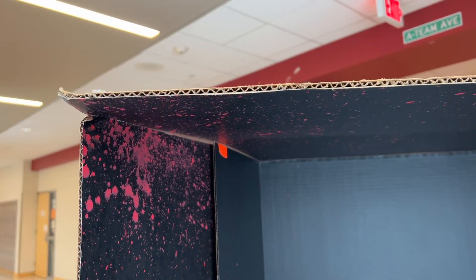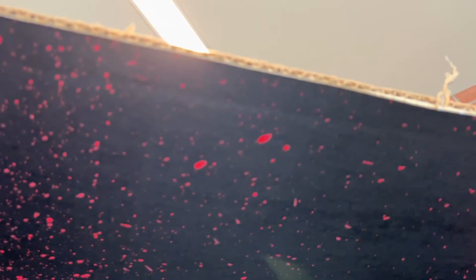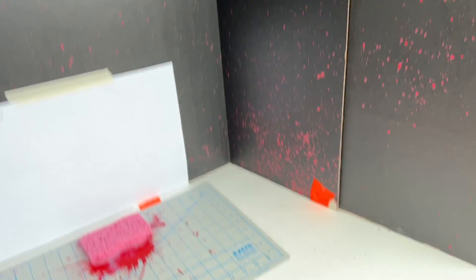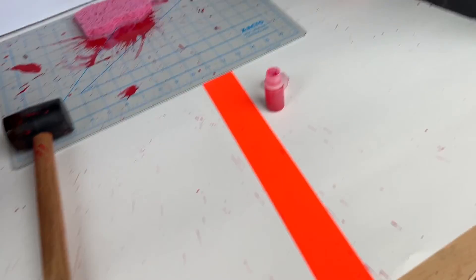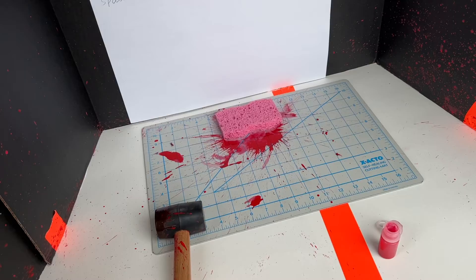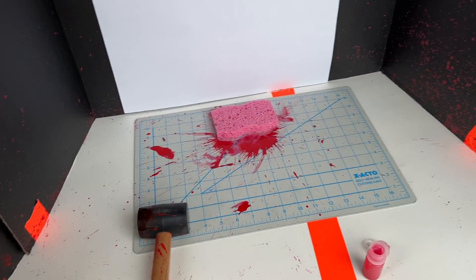Okay so this is our medium velocity paint spatter booth and our blood spatter booth and as you can see it's got sides, a back and a roof so that the spatter does not get everywhere. The other thing it has is the mallet and a sponge assistant.